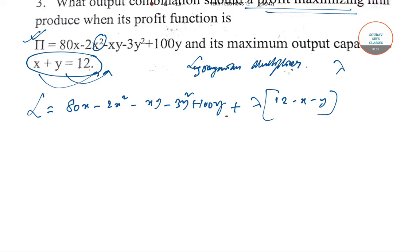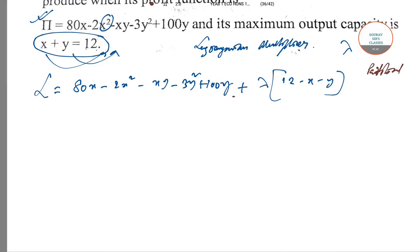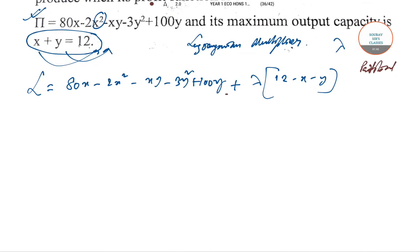Now taking partial derivatives - if you have any issues with partial differentiation, check my related videos. Del L/del X gives us 80 minus 4x minus y minus lambda equals zero.